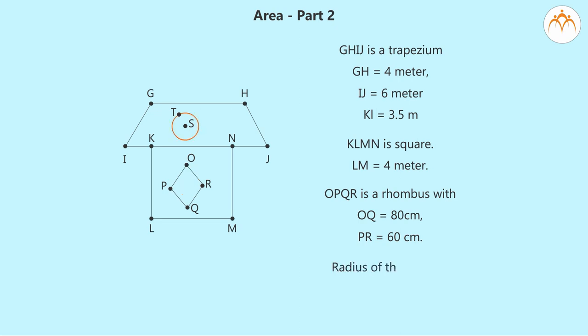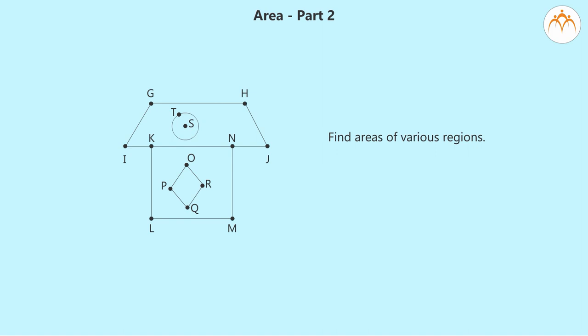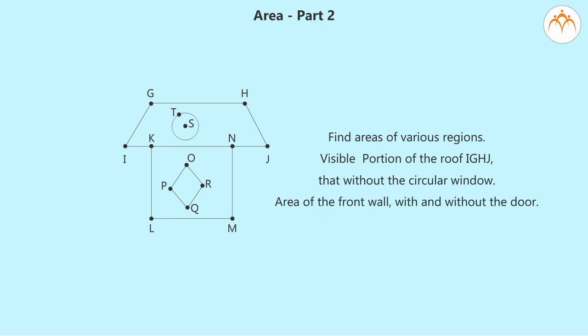Radius of the circle is 0.5 meters. Find areas of various regions. Visible portion of the roof IGHJ, that without the circular window. Area of the front wall with and without the door.